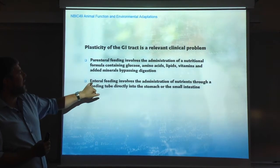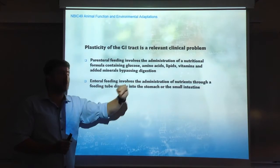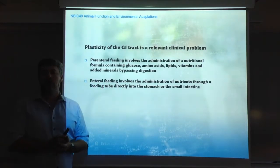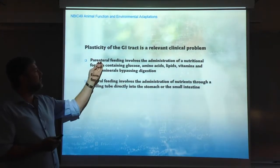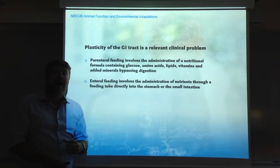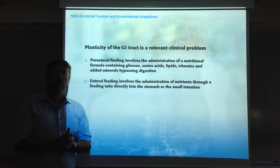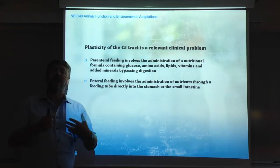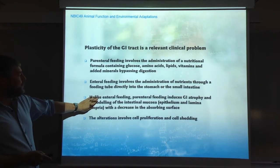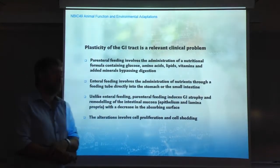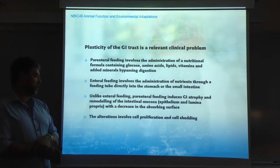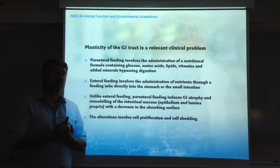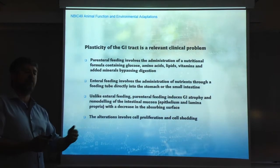As opposed to parenteral feeding, we have enteral feeding, in which the nutrients are administered directly into the stomach or the small intestine. In this case, we are not bypassing the gastrointestinal tract. There are a lot of patients that are fed through parenteral feeding. What happens to the gastrointestinal tract when it is not being used? The answer is that it atrophies. Parenteral feeding induces GI atrophy and remodeling of the intestinal mucosa, with a decrease in the absorption surface, affecting both cell proliferation and cell apoptosis or cell shedding.